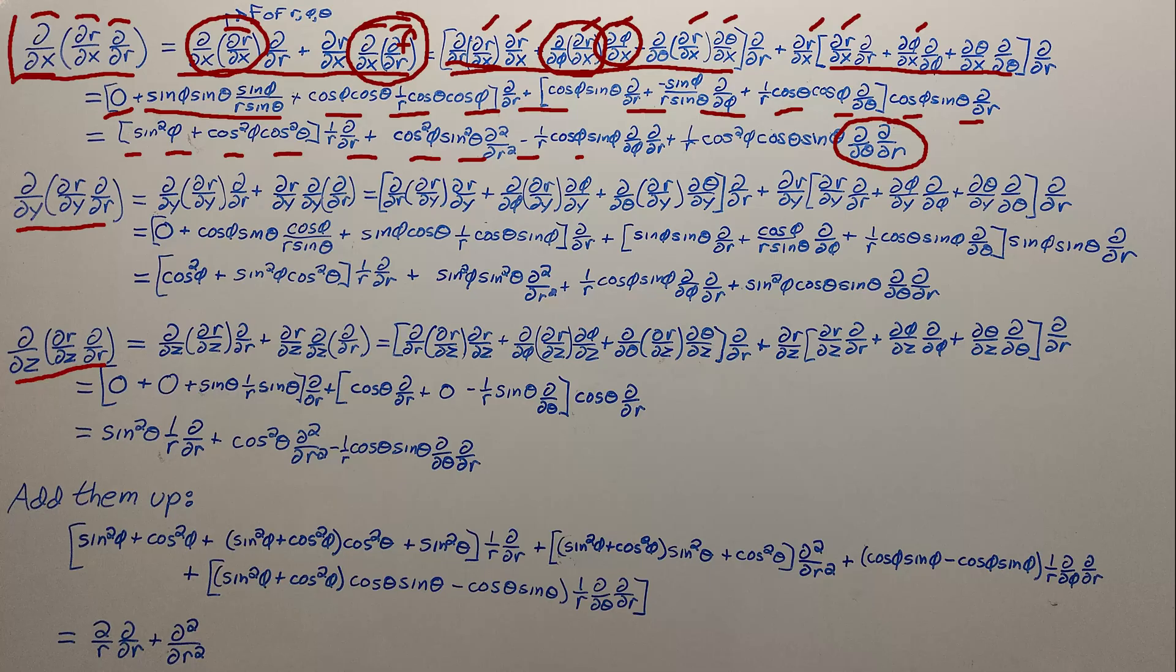So if you want to pause it here, if you want to take a look and check your algebra against mine, looking at how we expanded all of this out for the y part of it. And then for the z part of it. And with the z part of it, we got more zeros. So that was nice.